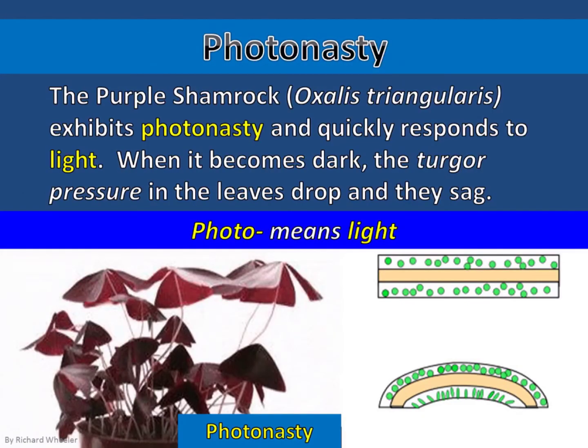The purple shamrock exhibits photonasty and quickly responds to light. When it becomes dark, the turgor pressure in the leaves drops and they sag.